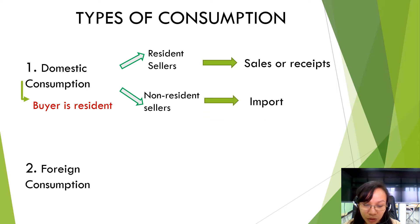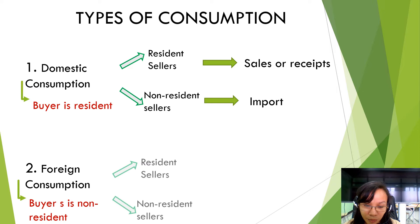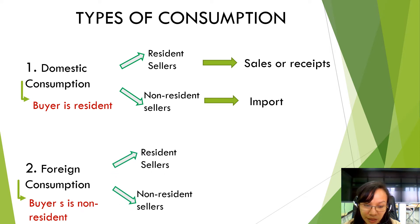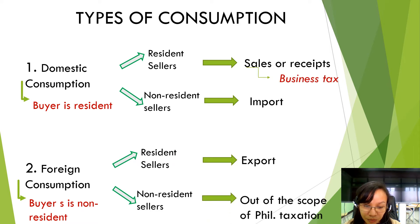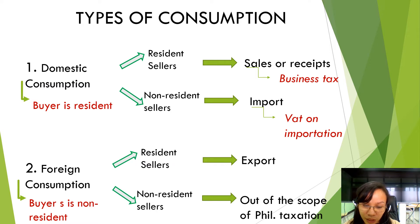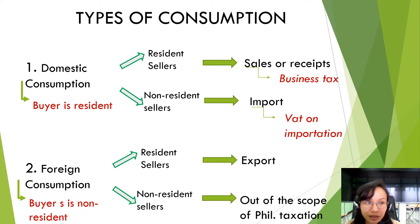The second type of consumption is foreign consumption. Here, the buyer is a non-resident buyer, and can either purchase goods or services from a resident seller or non-resident seller. The transaction from resident seller to non-resident buyer is what we call export, while the transaction from non-resident seller to non-resident buyer is practically a transaction not within the scope of Philippine taxation. Under domestic consumption, sales or receipts are subject to business tax, while import is subject to VAT on importation.